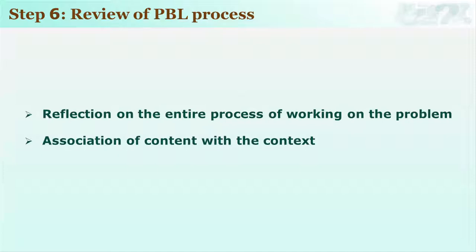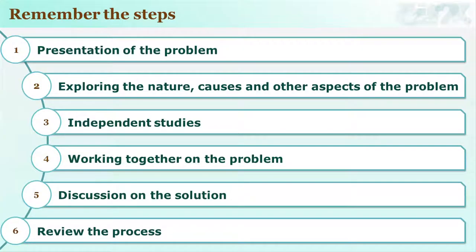Association of the content with the problem helps that content become more applicable for the students. Now, as you have learned about the entire process of PBL, let's do a recap of the stages: presentation of the problem, exploring the nature causes and other aspects of the problem, independent study, working together on the problem, discussion on the solution, and review of the process. PBL is a combination of group work as well as independent study, and it is this combination that makes learning meaningful and interesting for students.